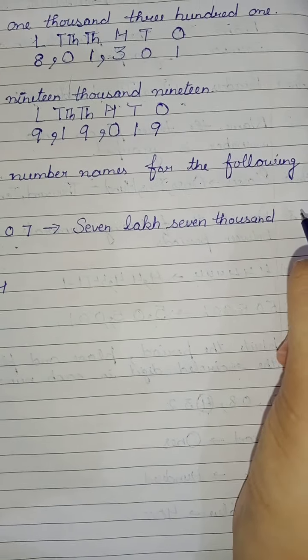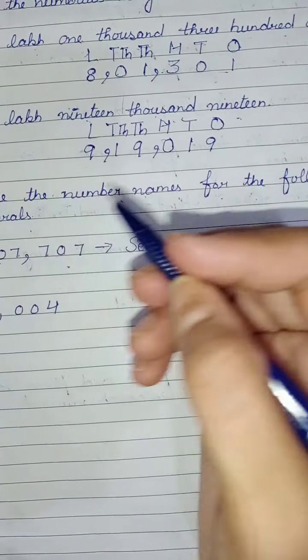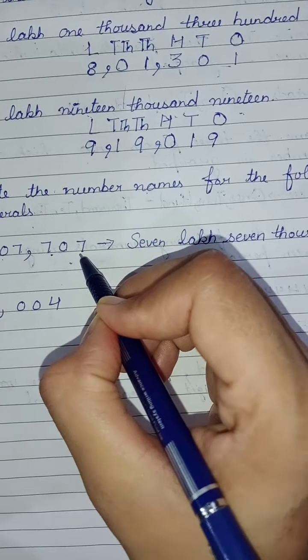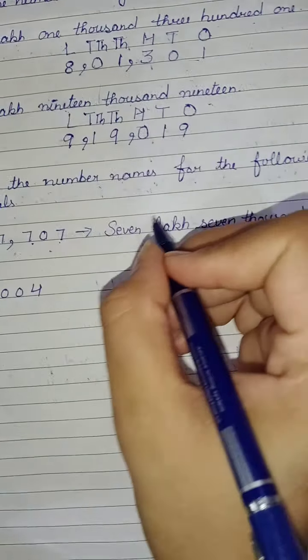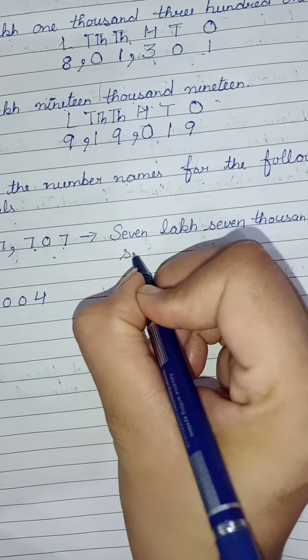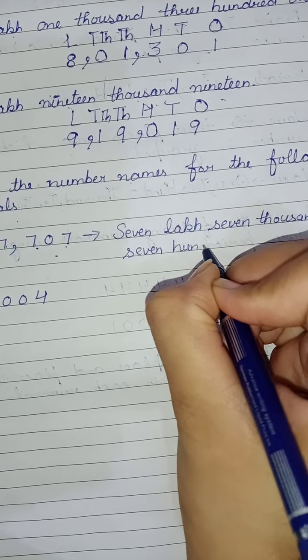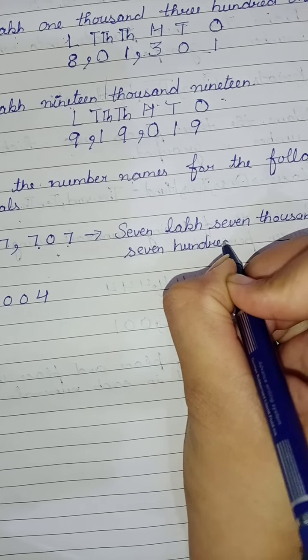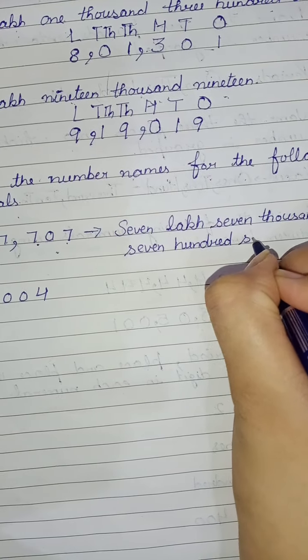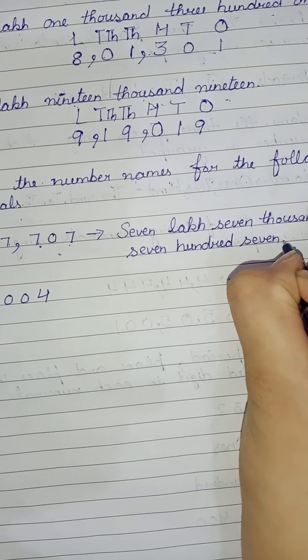Come, do this with me. Seven thousand. Next, the hundreds family has 7, 0, 7, so we will write here seven hundred seven. Easy, right?